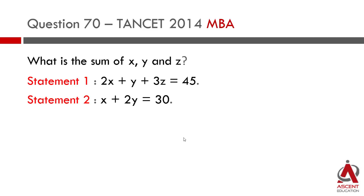The question is this: what is the sum of x, y and z? There are two statements that follow as with any question. The first one is 2x plus y plus 3z is equal to 45. The second statement is x plus 2y is equal to 30.